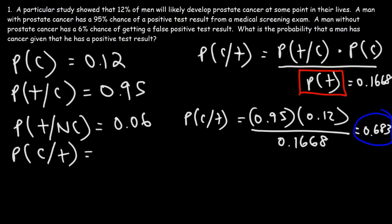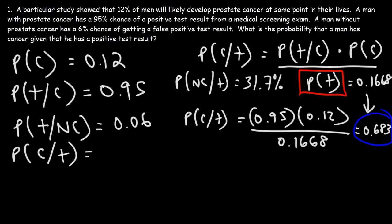So there's approximately a 68.3% chance that the person will have cancer given that they have a positive test result. The probability that the person does not have cancer even though they have a positive test result is 100% minus 68.3%, which is 31.7%. So sometimes, even if you get a positive test result, it doesn't mean that you have that condition — there's always a risk factor. The answer we're looking for in this problem is 68.3%.